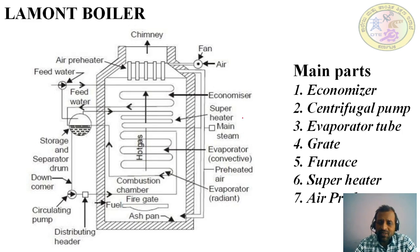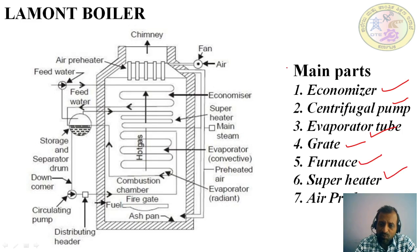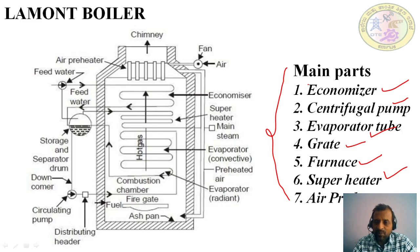The main parts of the Lamont boiler are: economizer, centrifugal pump, evaporator tube, grate, furnace, superheater, and air preheater. These are all the components of the Lamont boiler.